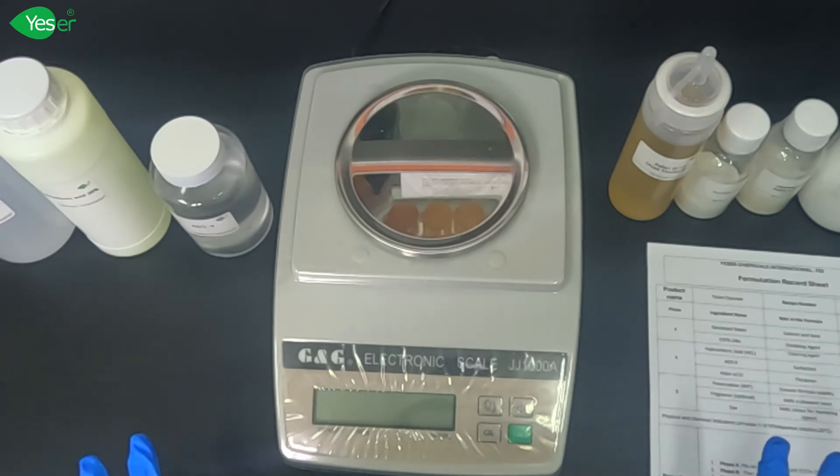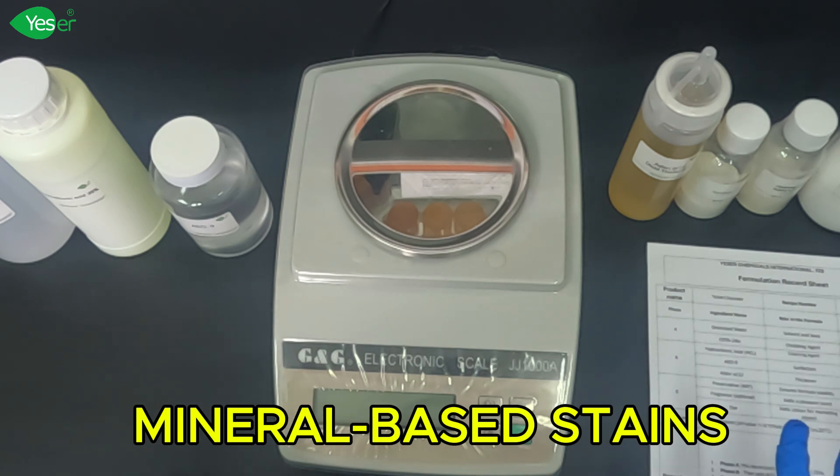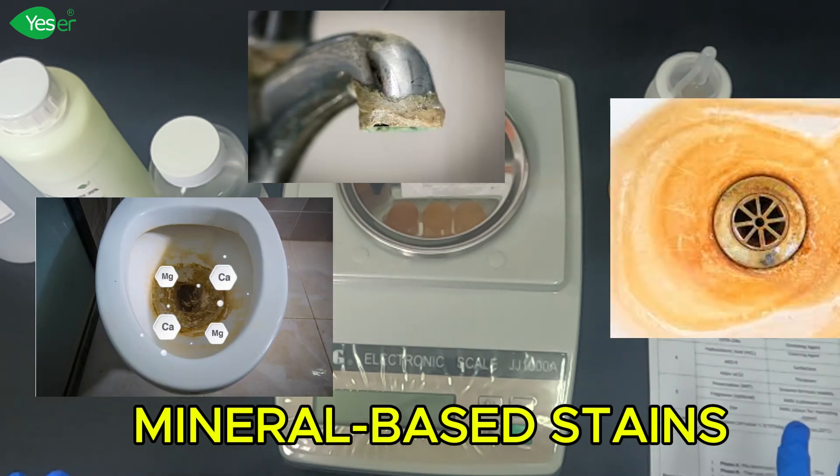Let's start with the types of dirt a good toilet cleaner needs to tackle. There are two main types: mineral-based stains like limescale and rust. These are caused by hard water and leave behind tough deposits.